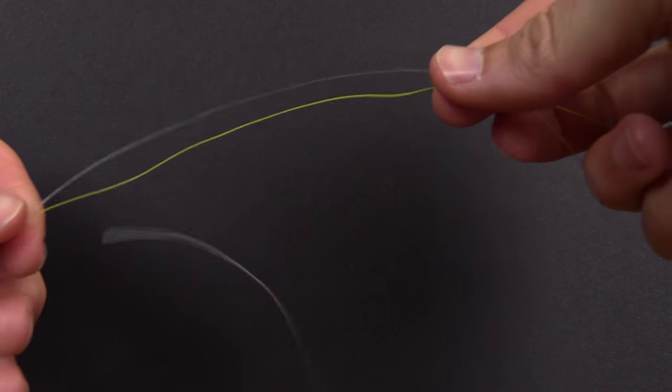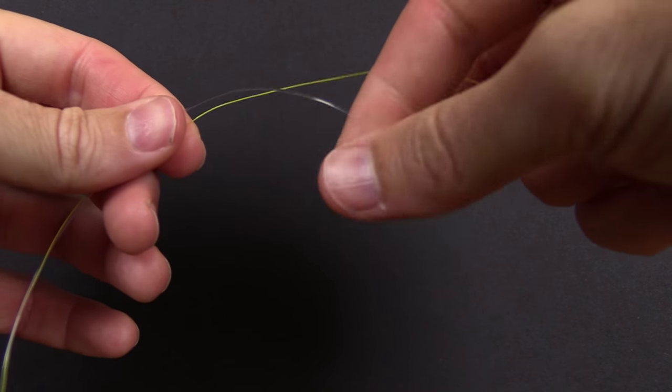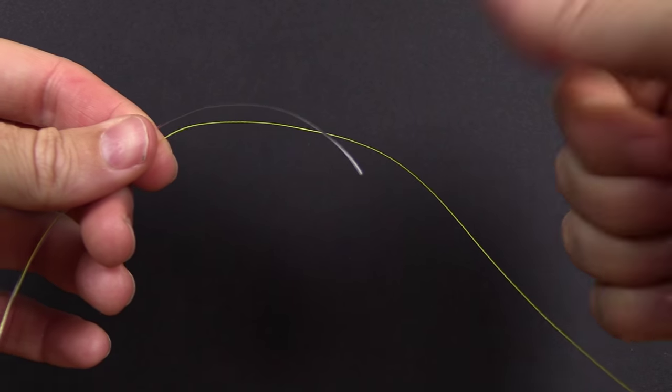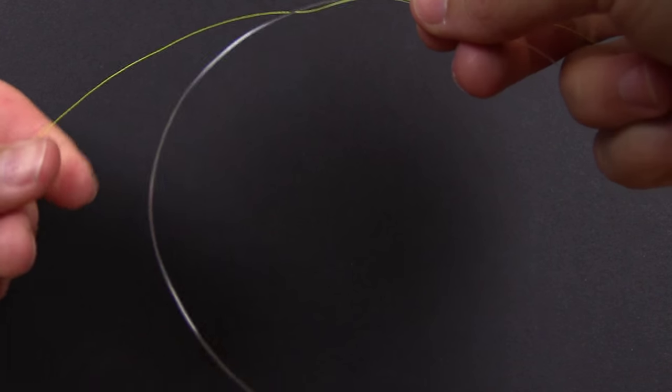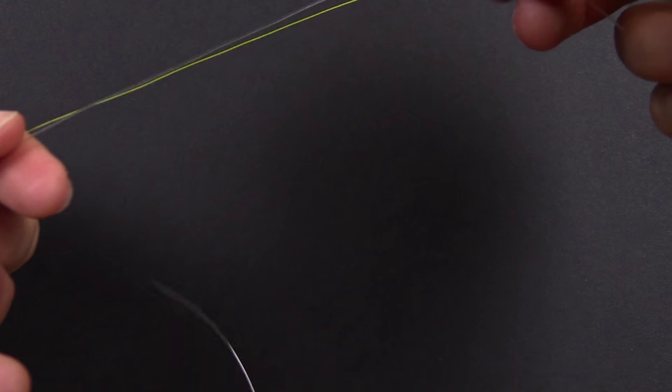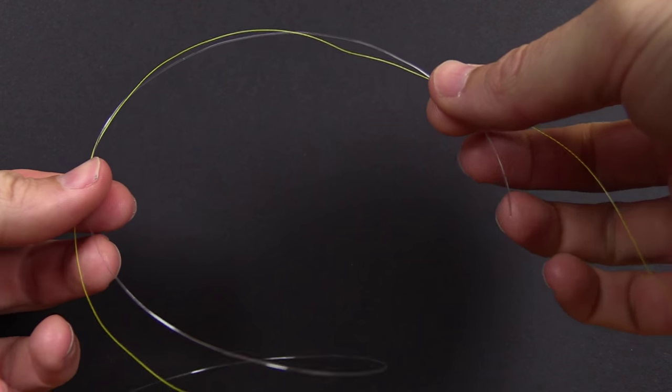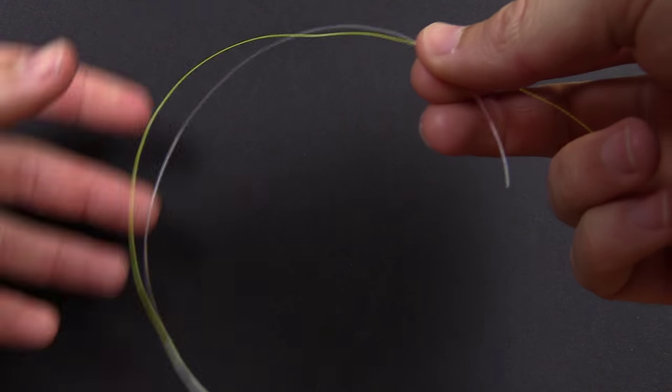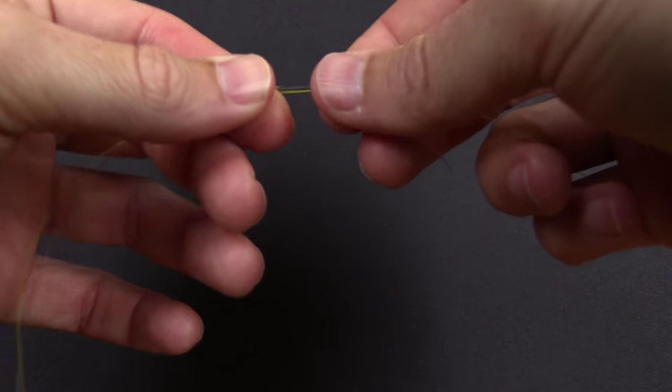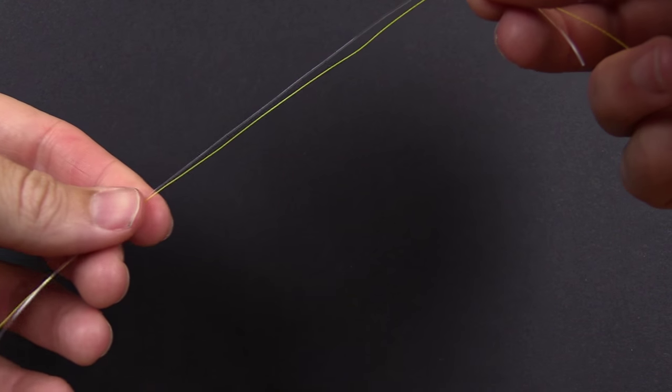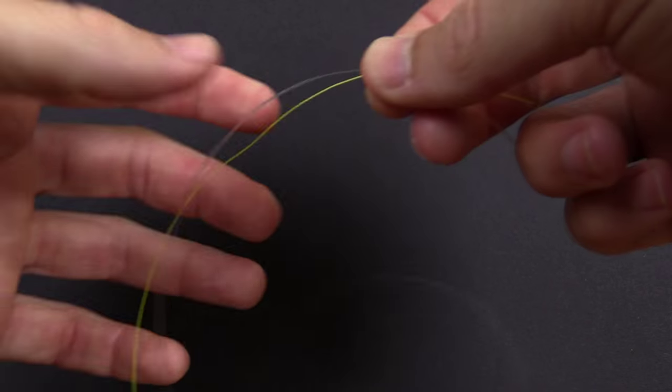Next step is to overlap the two lines. I have the tag end of the leader line facing towards the right and the tag end of the braid facing towards the left. I've got about eight or nine inches overlapped because with braid you always want to do more turns than you do with mono because it doesn't have quite as much friction.